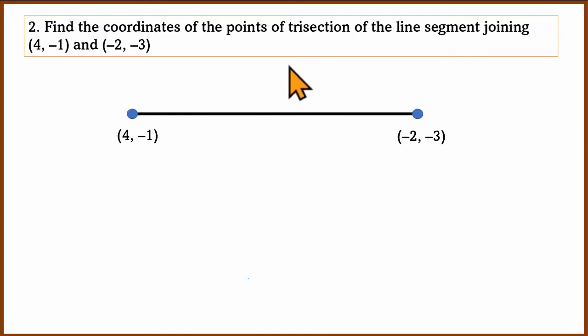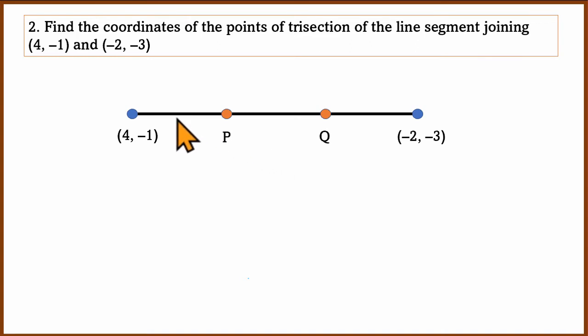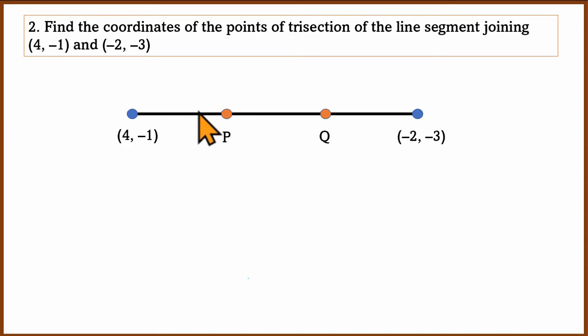Trisection means dividing into 3 equal parts. The two trisection points are called P and Q. The three lengths between A, P, Q, and the endpoint are all equal — this is trisection.